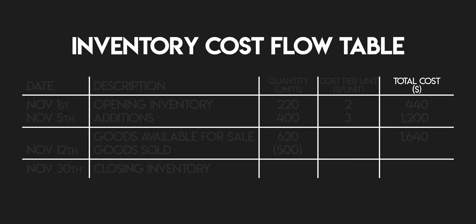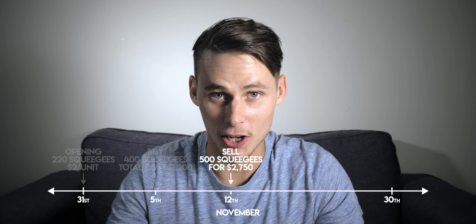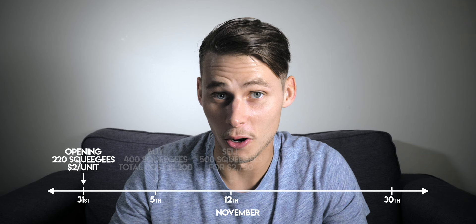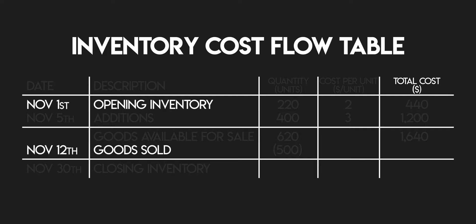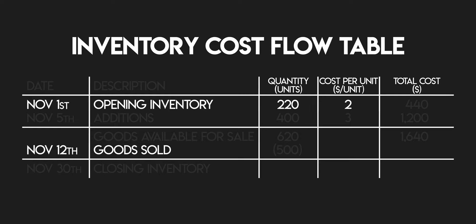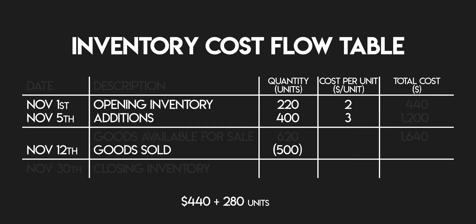Here's where FIFO comes in — first in, first out. You sold 500 units, but what did it cost you? Under FIFO, the first units you bought in are the first to be sold. You had an opening inventory of 220 units which cost you $2 per unit, but you still need to sell another 280 units to reach 500. The next 280 units come from your additions, which cost you $3 per unit. So here are the workings: 220 units multiplied by $2 is $440, and 280 units multiplied by $3 is $840. $440 plus $840 is $1,280 — your total cost of goods sold.